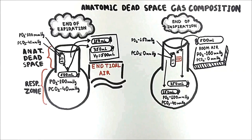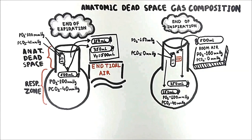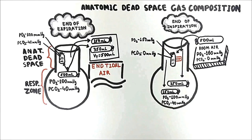Regarding the composition of room air versus atmospheric air, there are different statements, and this may not be very important for the USMLE. However, the main point to remember is that some sources say room air has more carbon dioxide compared with atmospheric air, and that atmospheric air PCO2 is zero.